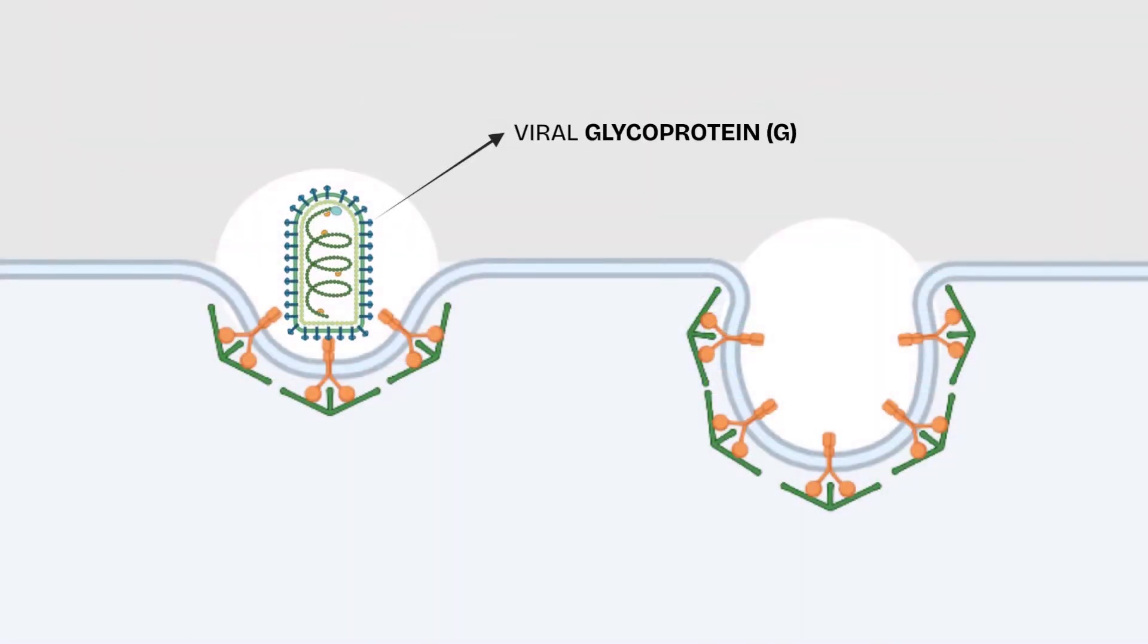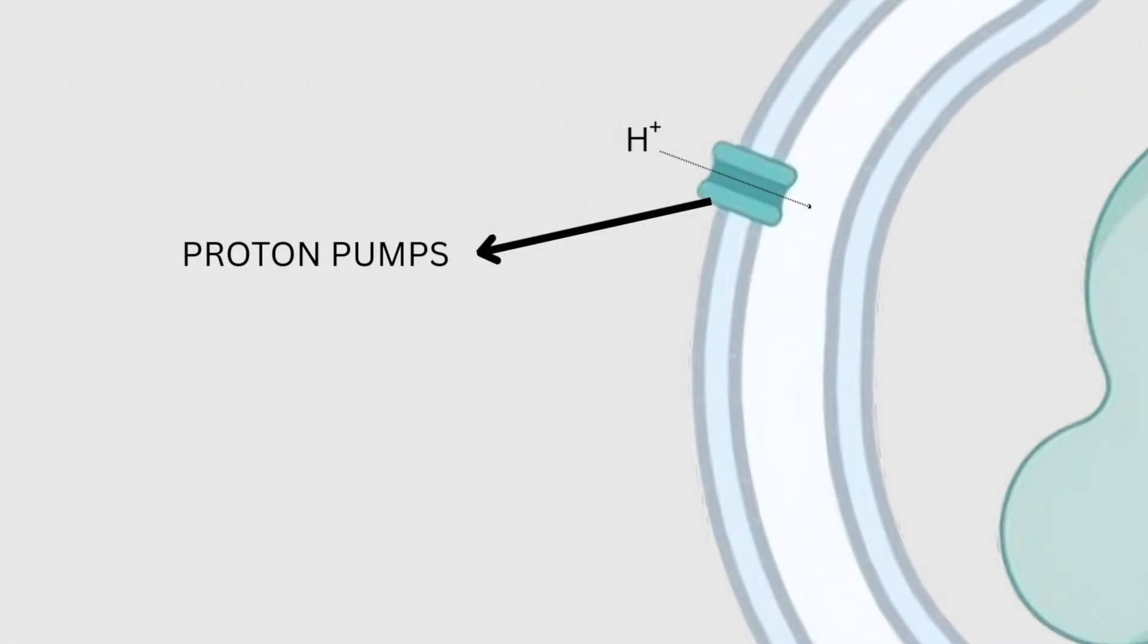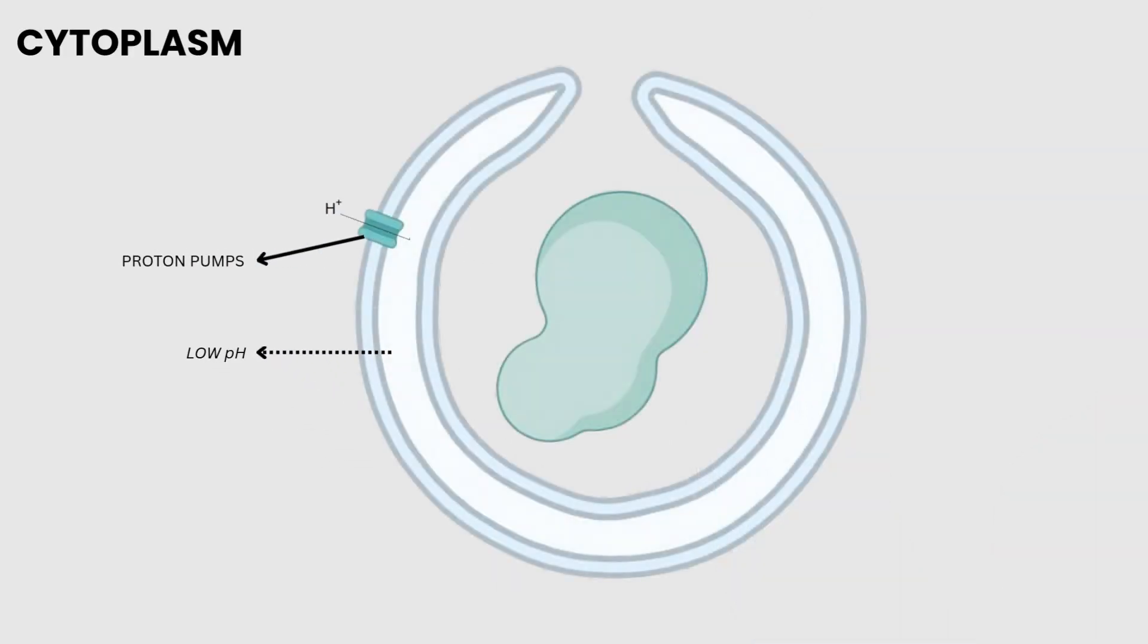Viral glycoproteins on the RABV envelope bind to cell surface receptors, initiating clathrin-mediated endocytosis. Proton pumps on the endosome membrane lower the internal pH, and this acidic environment triggers conformational changes in viral proteins that fuse the viral envelope with the endosomal membrane, releasing the RABV ribonucleoprotein complex into the host cell's cytoplasm.